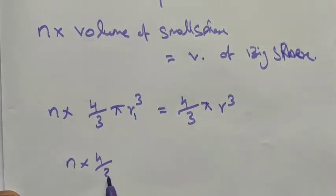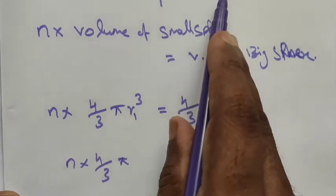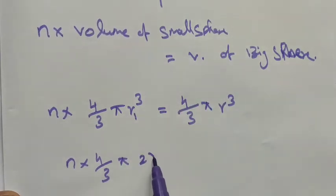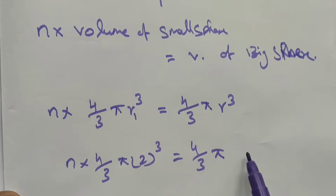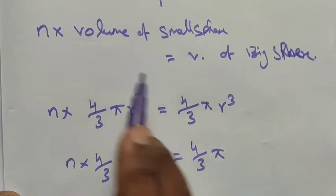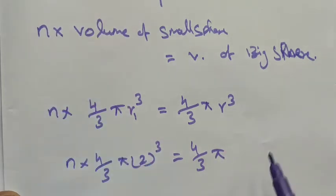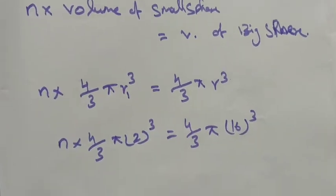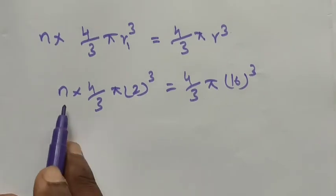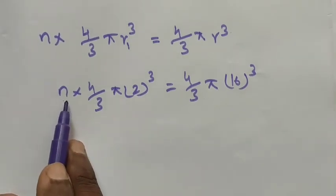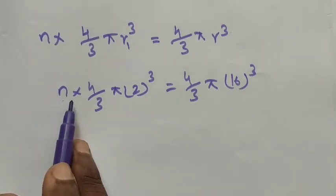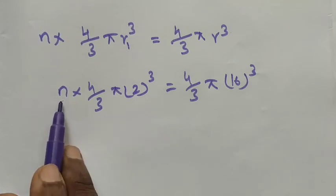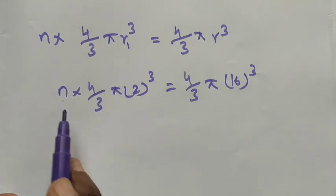Now apply the radius values: n into four by three pi into r1 cubed — r1 is 2, so 2 cubed — is equal to four by three pi into R cubed, where R is 16 cubed. We want to find n, the number of small spheres.